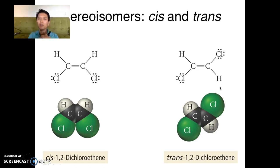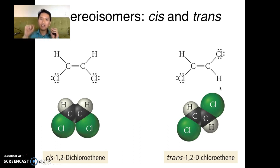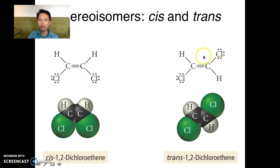Somehow they're still different. We know because they have different properties — one has a higher boiling point than the other — and just by looking at them, they look different. What's different is not the order in which they're connected, but the 3D shape. This carbon is connected to a carbon and a chlorine, and so is the other — but notice how this chlorine is facing down whereas that chlorine is facing up. That's what I mean by three-dimensional spatial orientation.